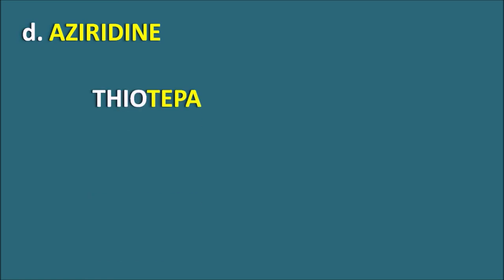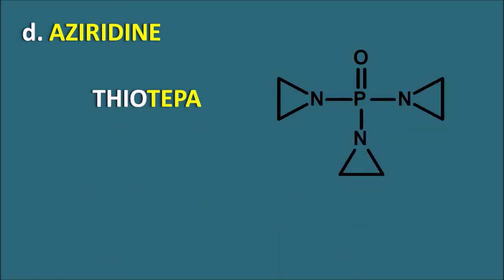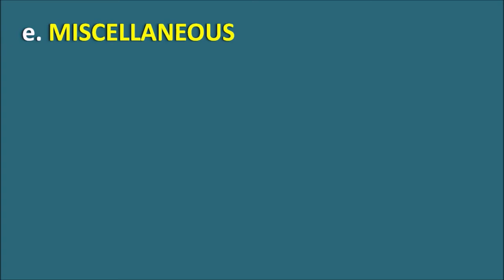The fourth subgroup is the aziridines. The main drug here is thiotepa, an older drug with three aziridine rings attached to a phosphorine group, which nowadays has very little use as an anti-cancer agent.